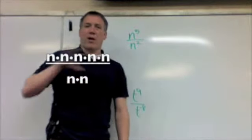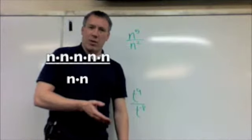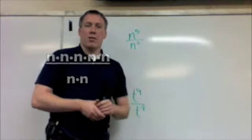So I have five n's on the top. I have two n's on the bottom. And therefore, two of those n's are going to cancel. And all I'm going to be left with is n times itself three times. So my answer is n cubed.